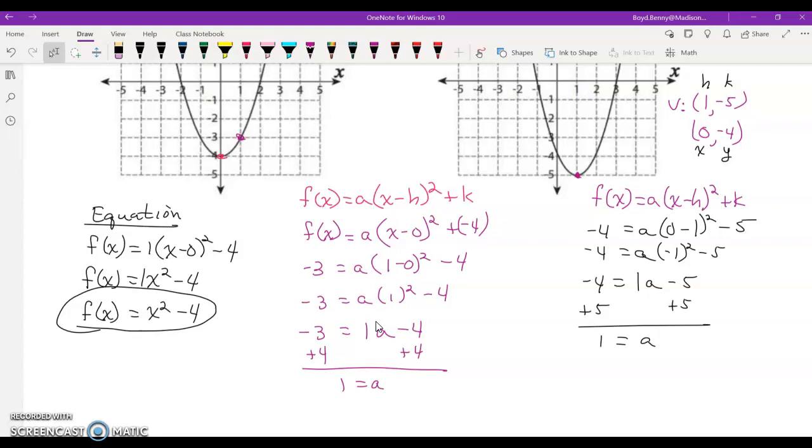Okay, so my final equation, just what I was asked to do, solve an equation, or find an equation, write an equation in vertex form, is f(x) equals, I'm not going to write the 1 in front of the parentheses this time, (x minus 1), h is 1, squared. And instead of plus negative 5, I'm going to go ahead and write negative 5. And this would be my equation of that curve in vertex form.